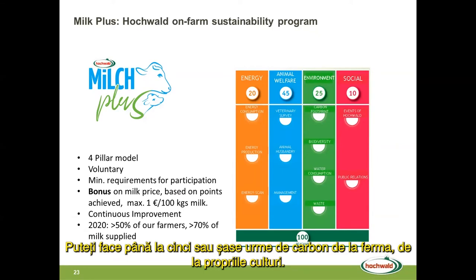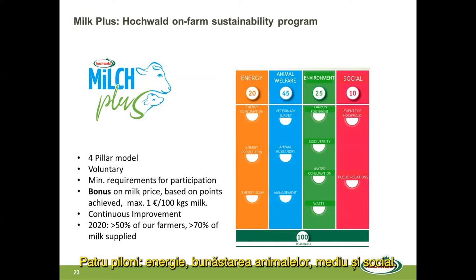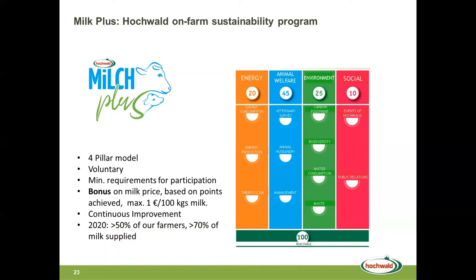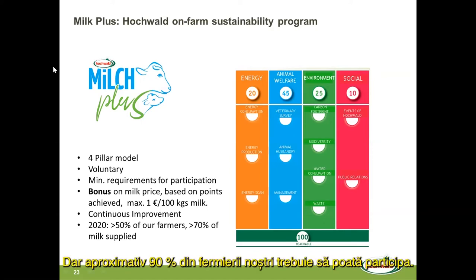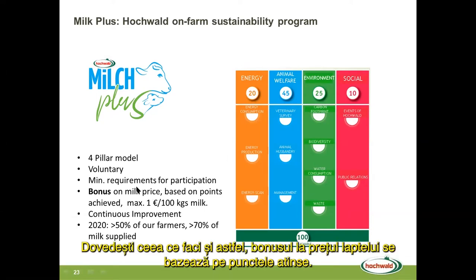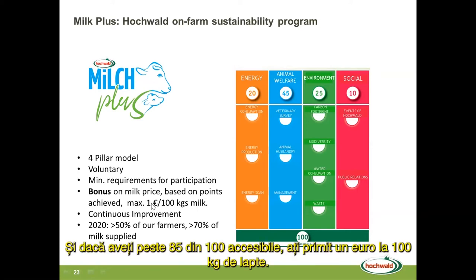Our Milk Plus program has four pillars: energy, animal welfare, environment, and social. It's voluntary, but we have some minimum requirements for participation — for instance, you have to take part in the QM sustainability module. About 90% of our farmers should be able to participate. It gives bonus points for all the things you prove you're actually doing, and the bonus on the milk price is based on points achieved. The minimum points to achieve a bonus is 55, and if you're over 85 out of 100 reachable points, you receive one euro per hundred kilograms of milk.